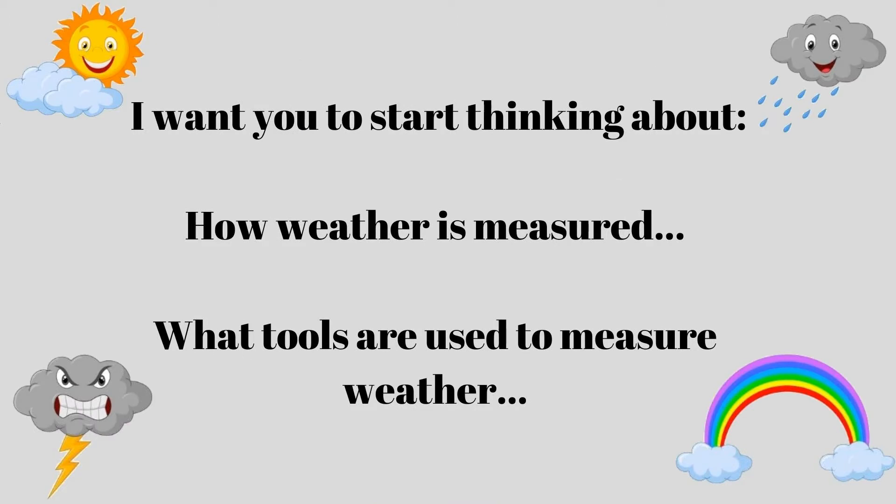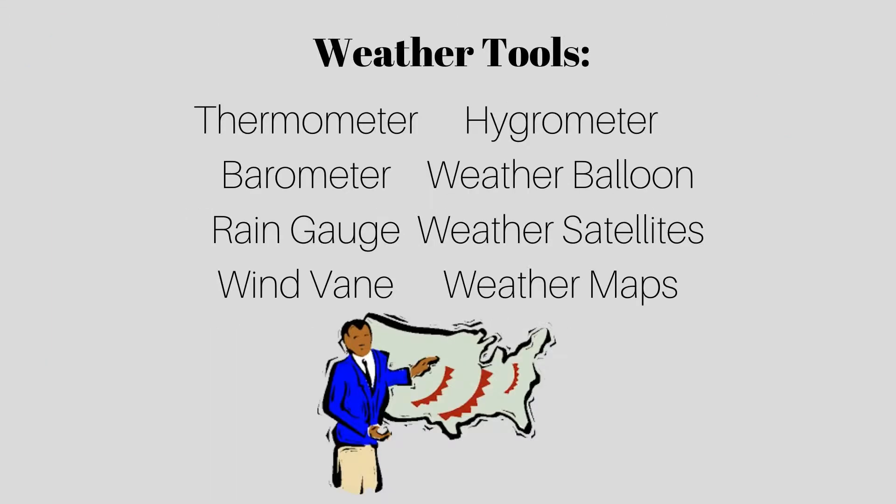I want you to start thinking about how weather is measured and what tools are used to measure the weather. The weather tools that we are going to be talking about are the thermometer, barometer, rain gauge, wind vane, hydrometer, weather balloon, weather satellites, and weather maps. That's a lot of tools. I wonder how many of them you already know.